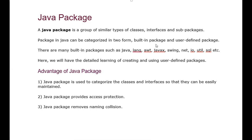The built-in package is the one that we get from the Java compiler and the Java Development Kit. We get packages such as java.lang, AWT, JavaX, Swing, Net, IO, Util, SQL, and many more. We generally use these packages in our programs and get many classes and methods from them.